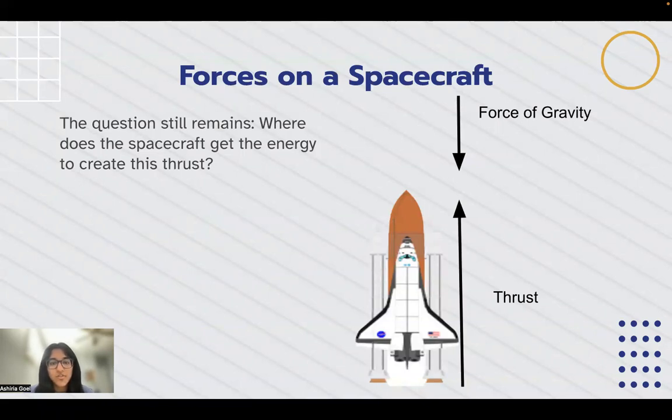Therefore, the rocket needs to create its own power of thrust in the opposite direction of gravity and in a greater magnitude. This allows the thrust to overcome the force of gravity and the entire rocket can move upward.